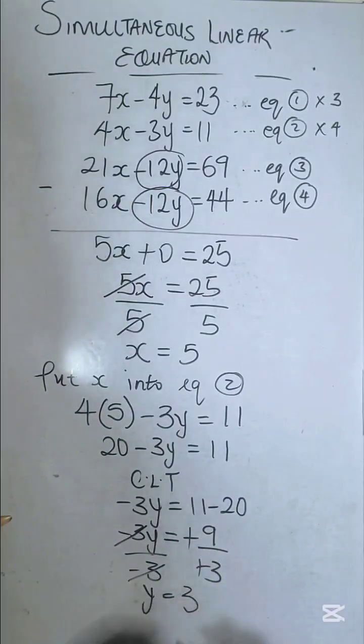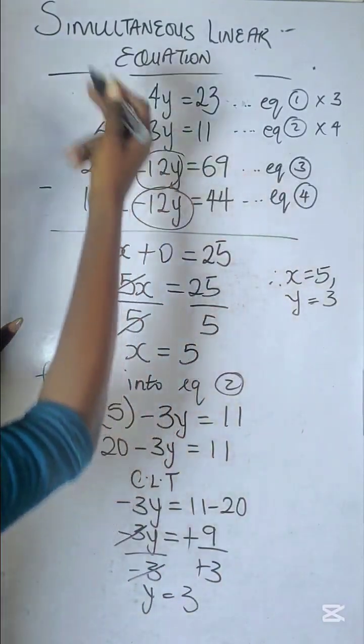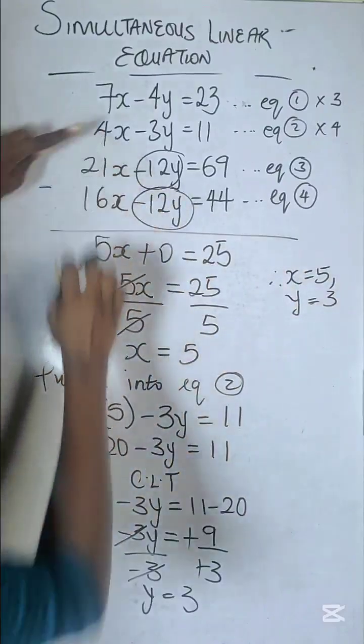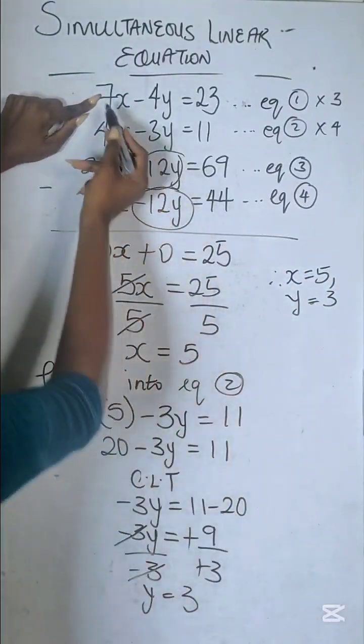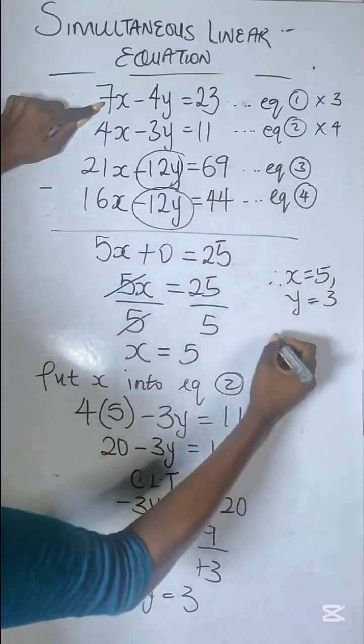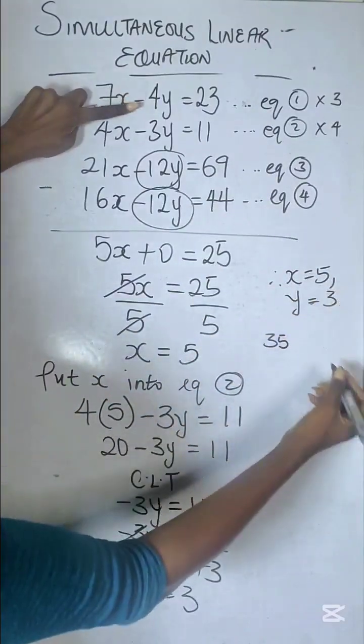Just substitute it back into any equation. I'm going to pick equation 2—let's use equation 1. So 7 times 5 is 35, because that's the value of x.